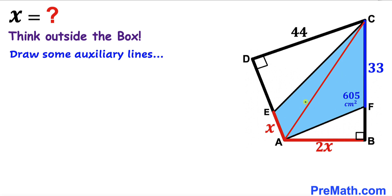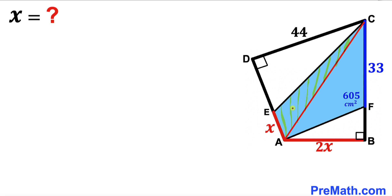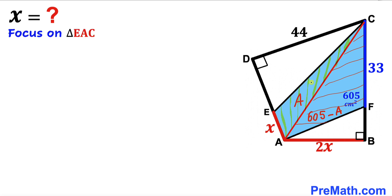Now let's make an observation. We can see that this blue quadrilateral has been divided into two triangles. Let's assume the area of triangle EAC is represented by A. Then the area of the other triangle CFA is going to be 605 minus area A.